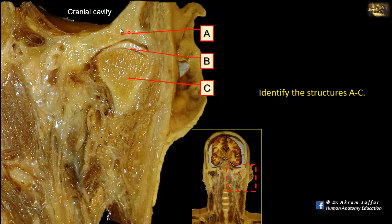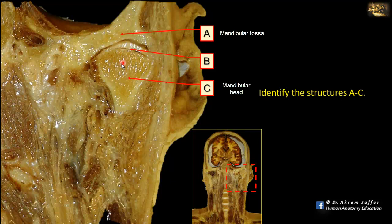A is part of the temporal bone — specifically the mandibular fossa of the temporal bone. And C is the head of the mandible. Here is the head, and here is the neck of the mandible. Together, they form the condyle of the mandible.